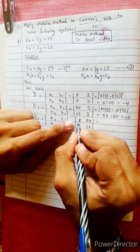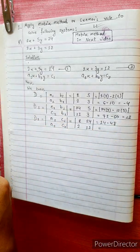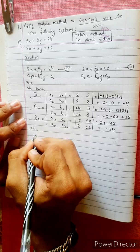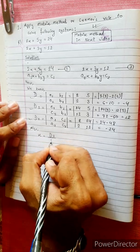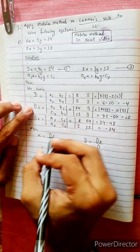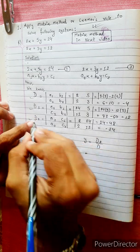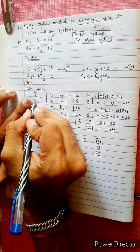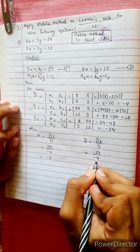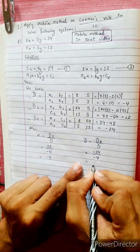Computing D2: (2 times 12) minus (2 times 24) equals 24 minus 48, which equals negative 24. So all determinant values are found: D equals negative 4, D1 equals 60, D2 equals negative 24.